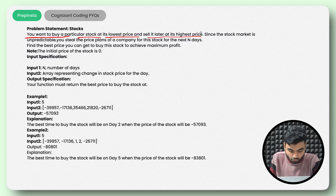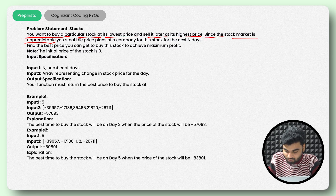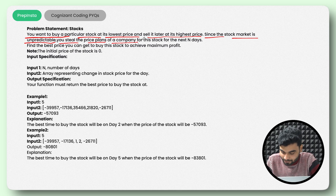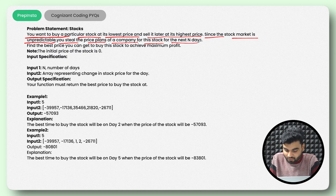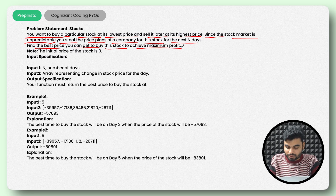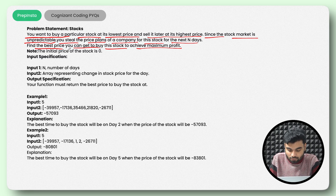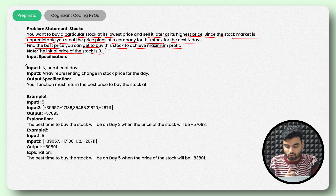The problem statement says: you want to buy a particular stock at its lowest price and sell it later for its highest price — this is what everybody wants to do. Since the stock market is unpredictable, you steal the price plans of a company for the next N days. Find the best price you can get to buy this stock to achieve the maximum profit. So we need to find the lowest price, and they're telling us the initial price of the stock will be zero.